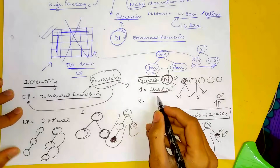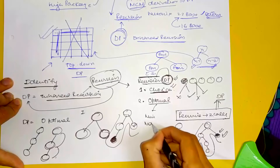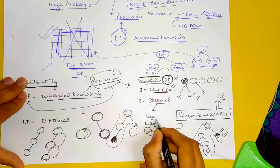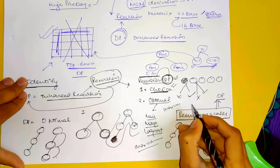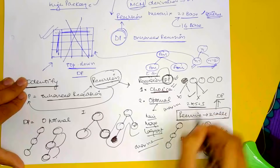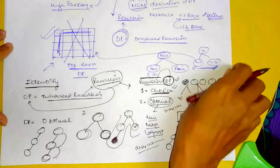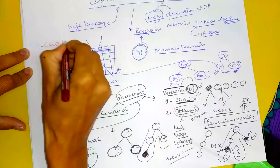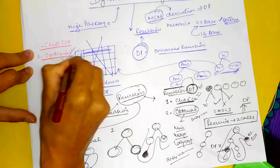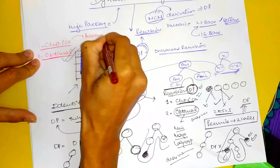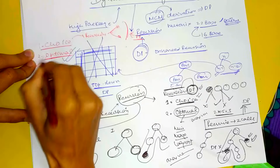Second identification criterion: optimal. Optimal means minimum or maximum — the largest, maximum profit, maximum value of an expression like 2×5+3. If the question asks for an optimal answer, and there are choices involved, then consider it DP.